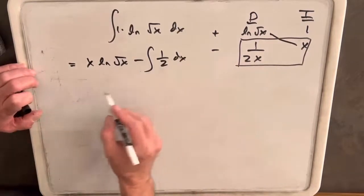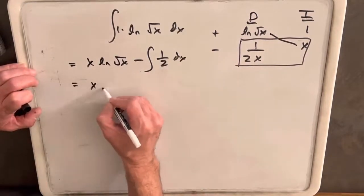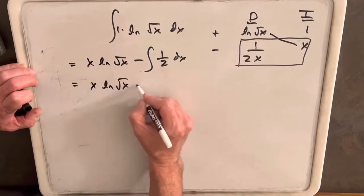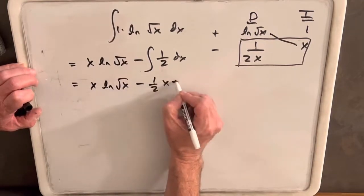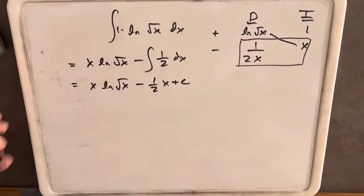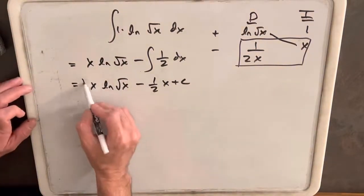And integrating 1 half, well, let's actually let's bring this all down. So we'll have x ln square root of x minus a half x plus c, integrating 1 half. That's our answer.